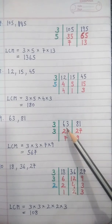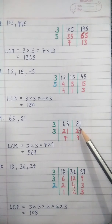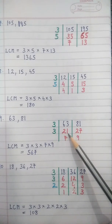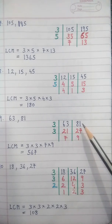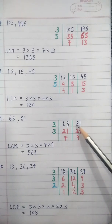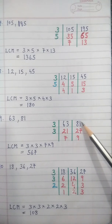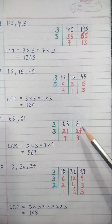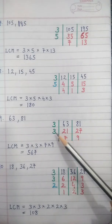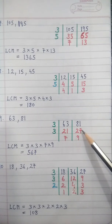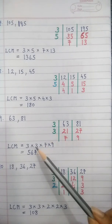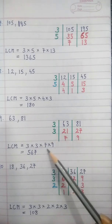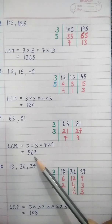Sum 9: 63 and 81. Factorize by 3: 3 twenty-ones are 63, 3 twenty-sevens are 81. Then 3 sevens are 21, 3 nines are 27. LCM = 3 into 3 into 7 into 9 = 567.